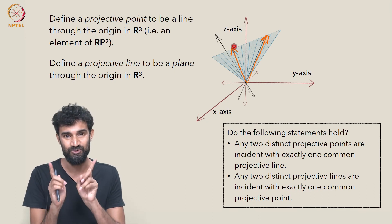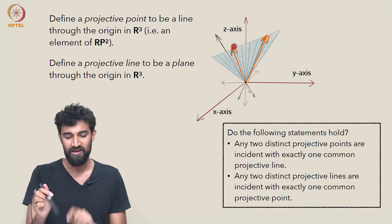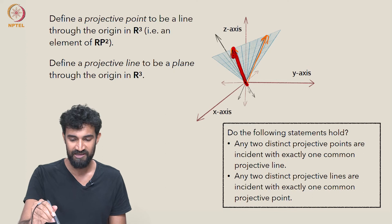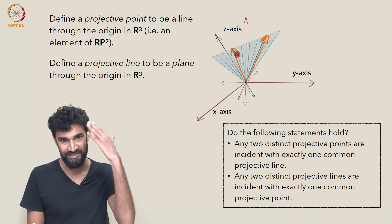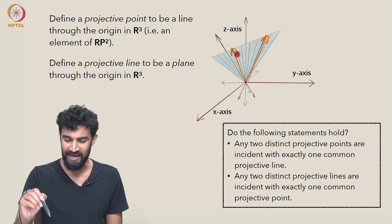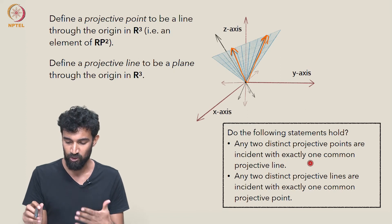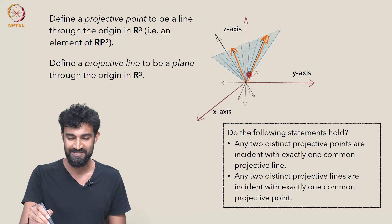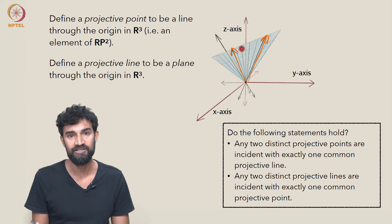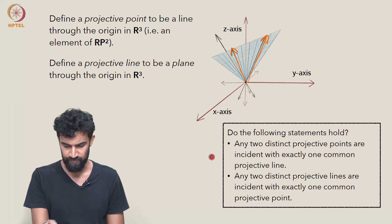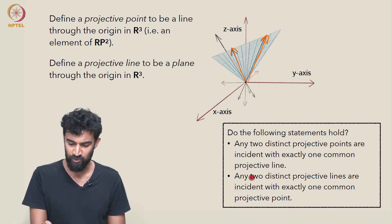Well, yeah, it's just the span of those two lines through the origin. We can take any vector representatives, take their span that's going to be a plane through the origin. And indeed, that will be the unique plane through the origin which contains these two vectors. So this holds.